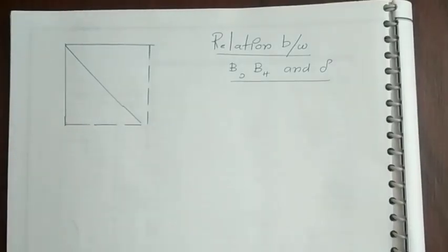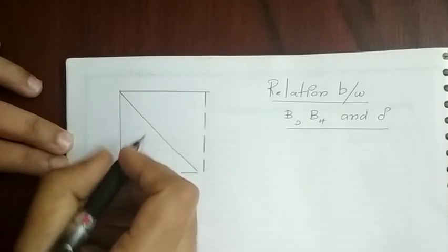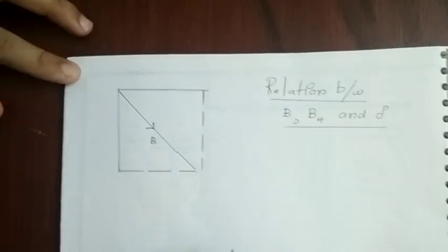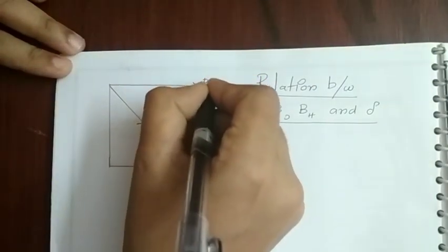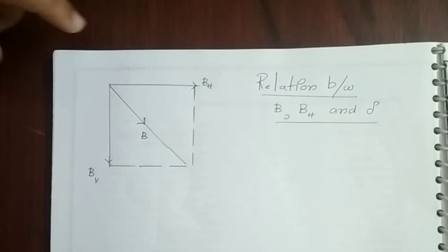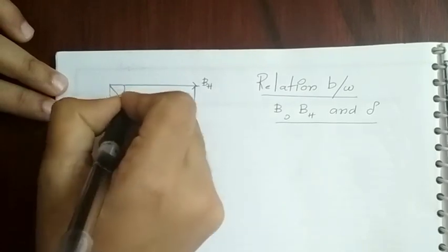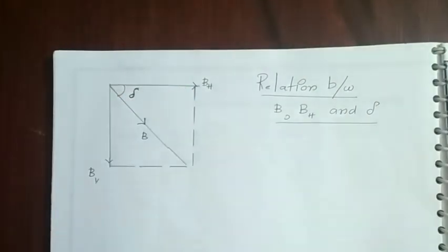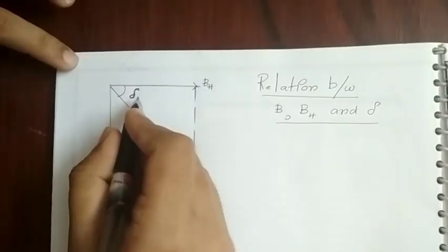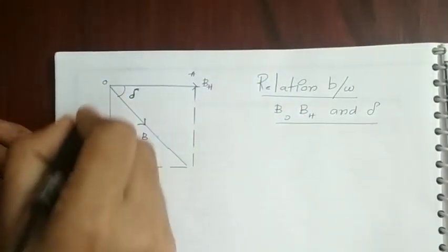Now we have to understand the relationship between B, BH, and delta. Suppose this is the resultant earth's magnetic field B, which can be resolved into two perpendicular components: the horizontal component BH and the vertical component BV. Let us name these as OA, OB, and OC.